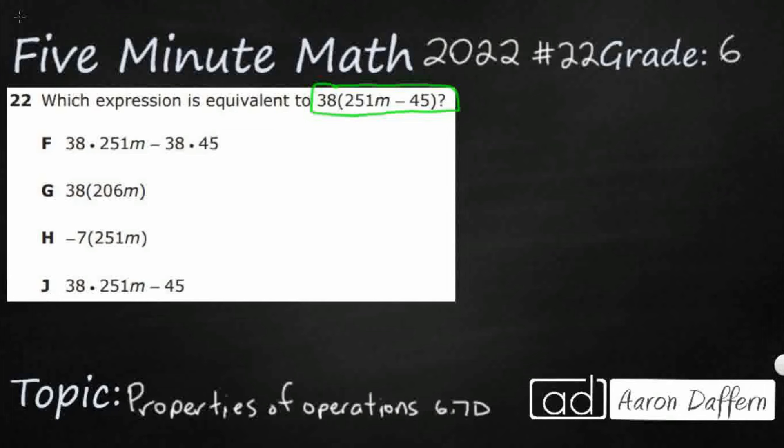This is an example of a property that we learned in 6th grade, the distributive property. Now, when you look for an example of the distributive property, this is what you're going to get: A times parentheses B plus C equals AB plus AC. And you might be thinking, well, that's not very helpful. Well, let me show you what's happening here.